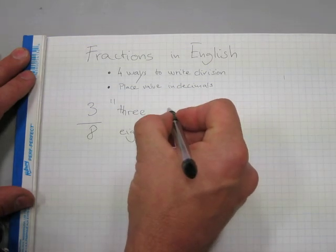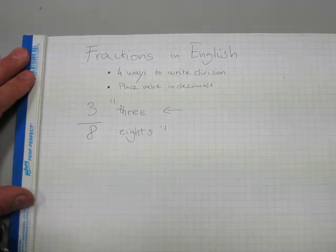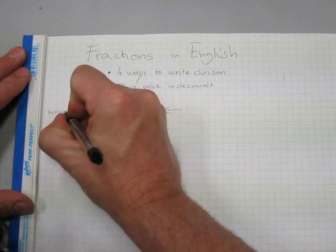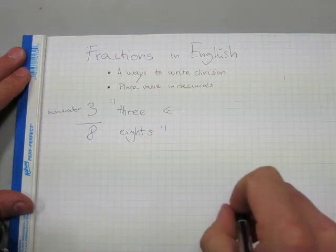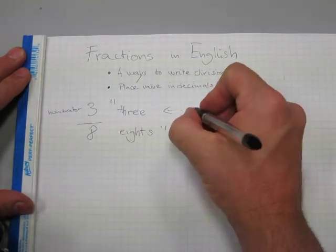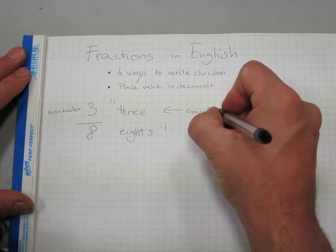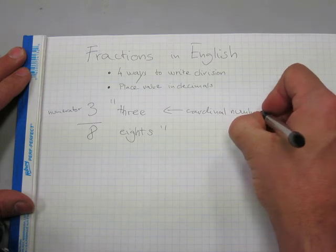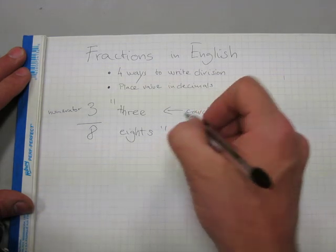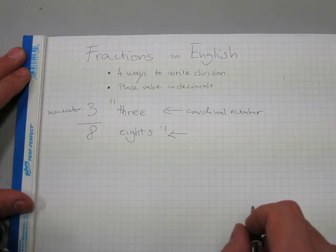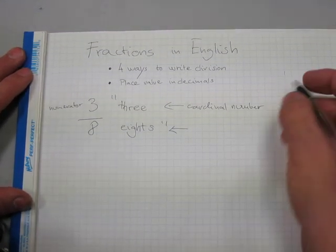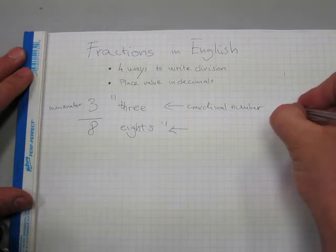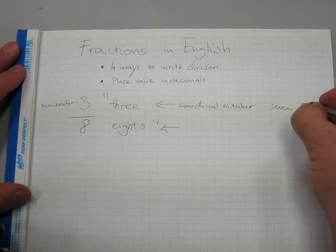Notice that the first number — in terms of math, this is the numerator. In terms of grammar, the first number is a cardinal number. Those are just called cardinal numbers. Other cardinal numbers would be 7 or 21.